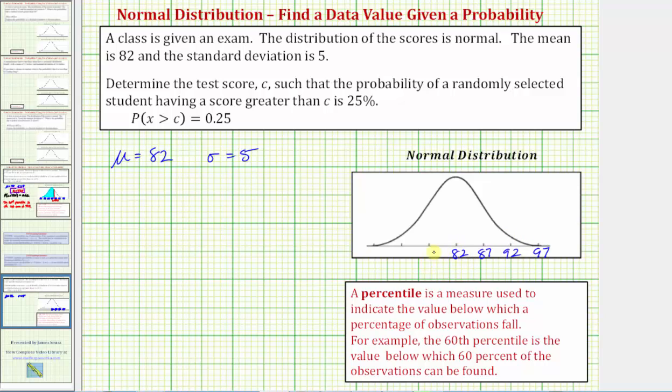To the left of 82, we have 82 minus five, which equals 77. Then 77 minus five equals 72. And then 72 minus five is equal to 67.